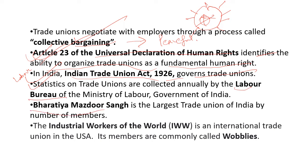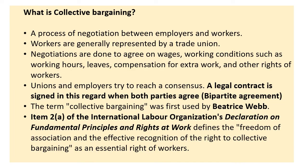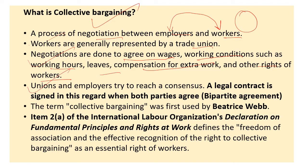Collective bargaining is a process of negotiation between employers and workers. Workers are generally represented by a trade union. Negotiations are done to agree on wages, working conditions such as working hours, leaves, compensation for extra work, and other rights of workers. Unions and employers try to reach a consensus.